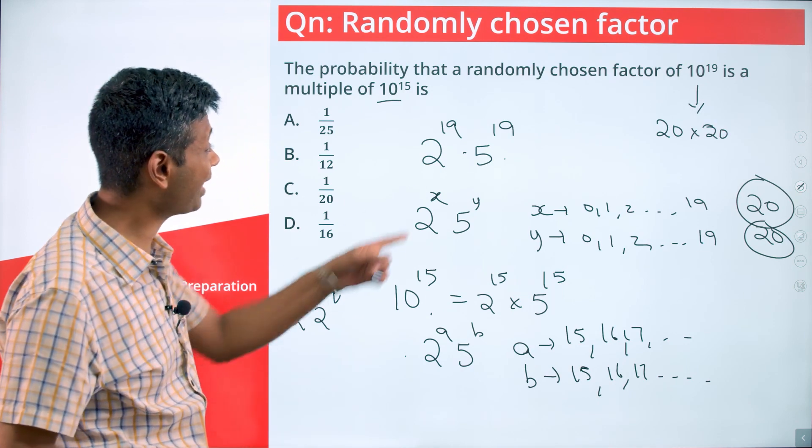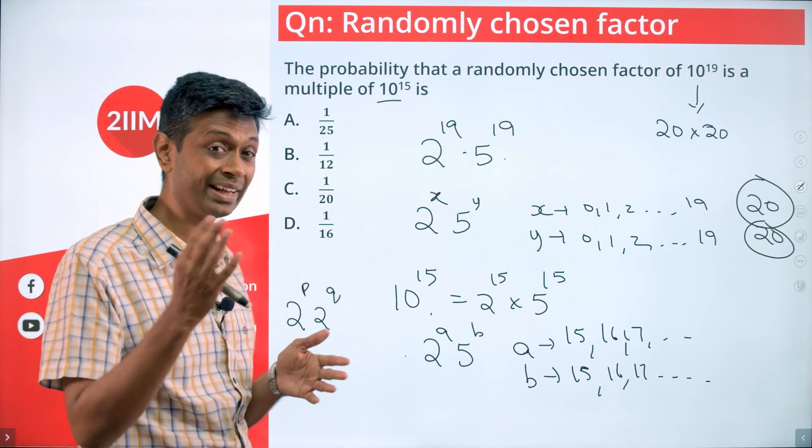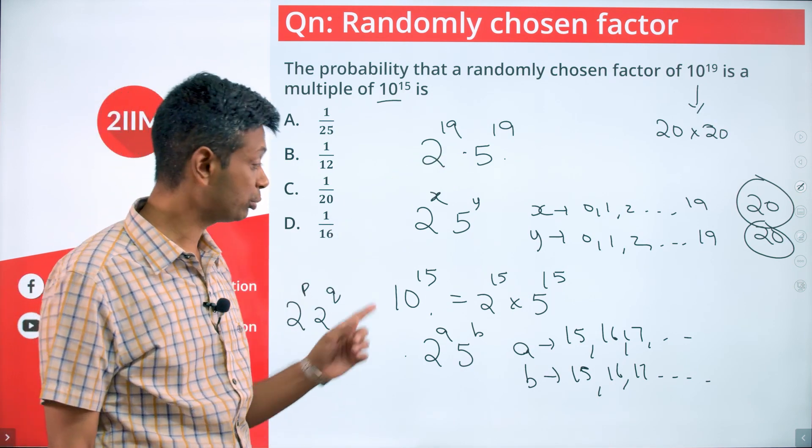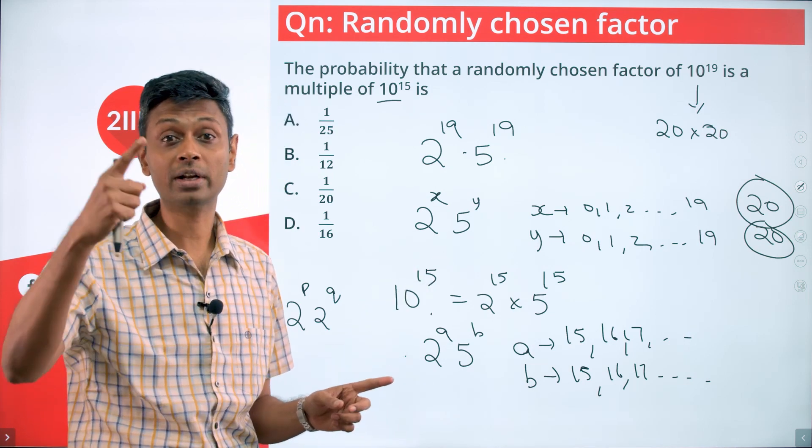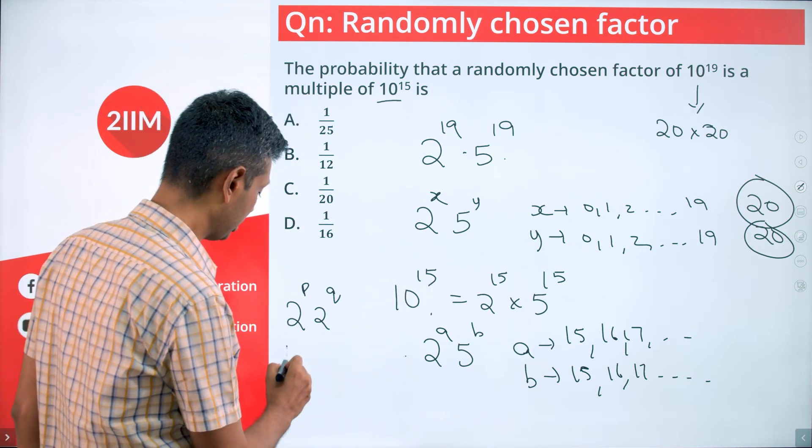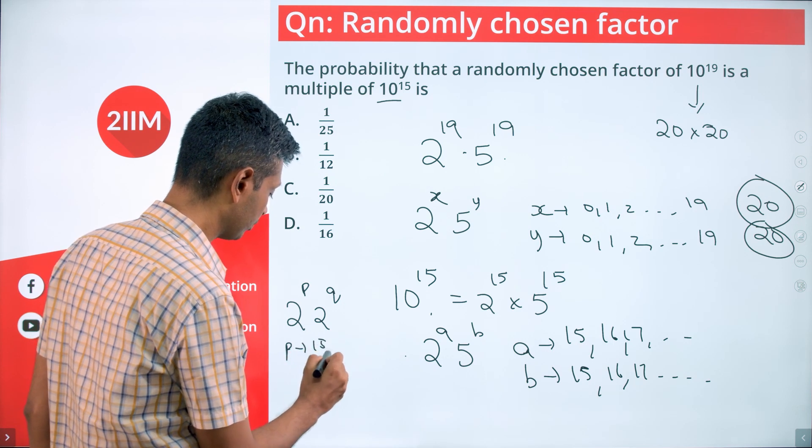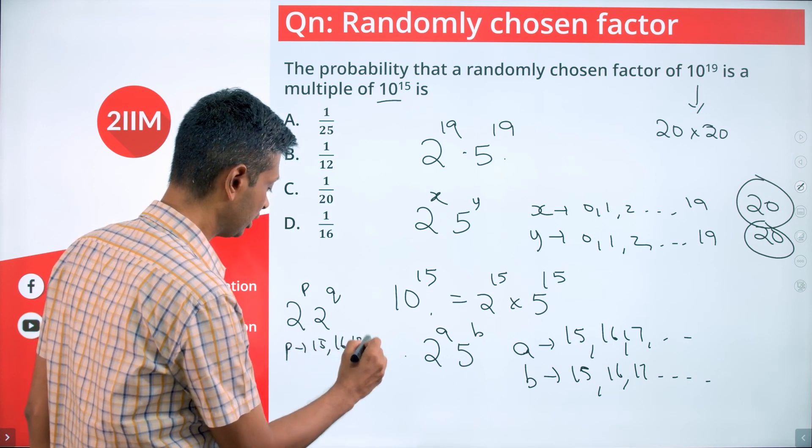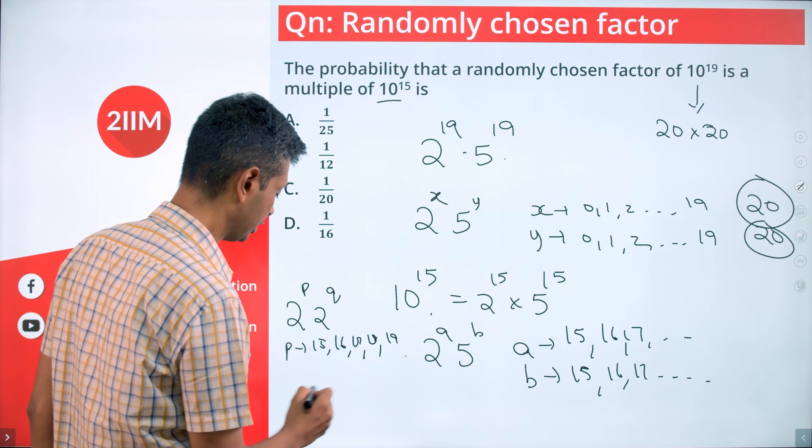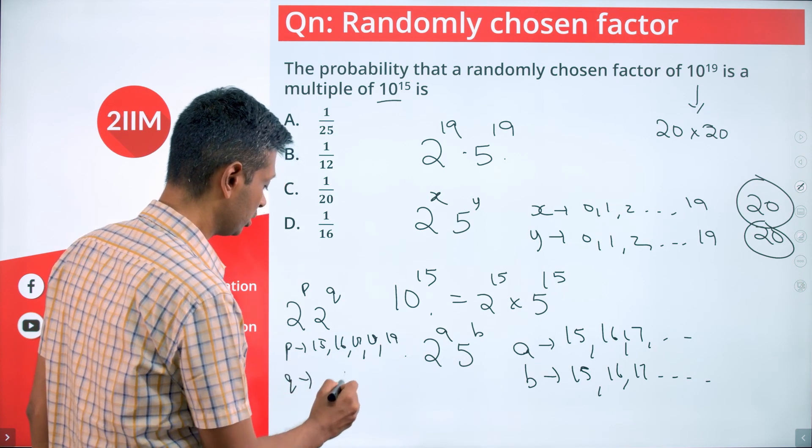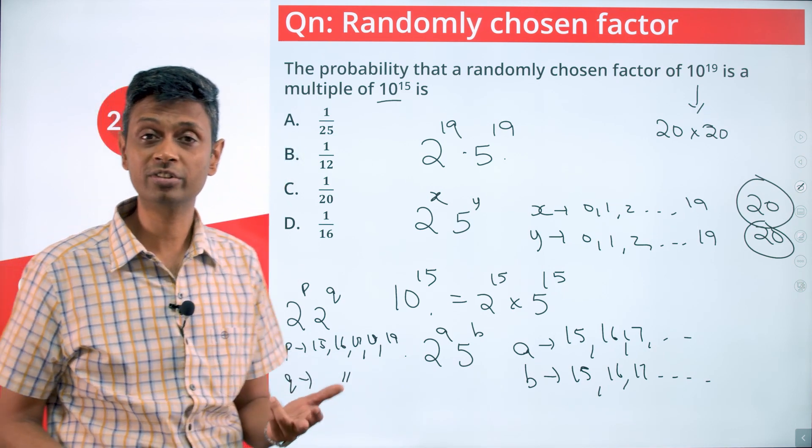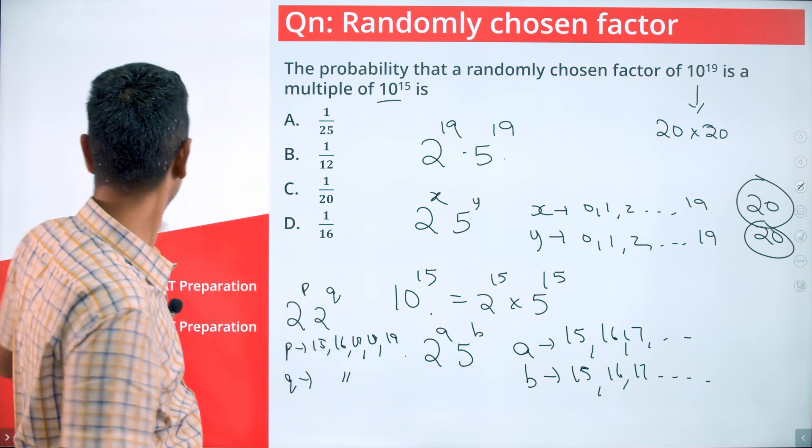In order to be a factor of this, p and q will have to be 19 or lower. In order to be a multiple of this, p and q will have to be 15 or higher. So p takes values 15, 16, 17, 18, 19, and q takes a similar set of values 15, 16, 17, 18, 19. Finally,